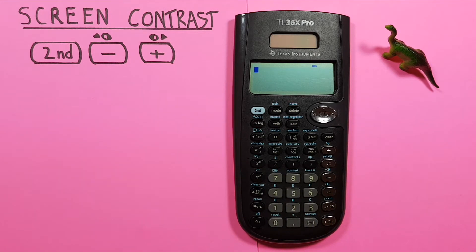You can adjust the contrast to brighten or darken the screen to make it more visible depending on your lighting conditions.